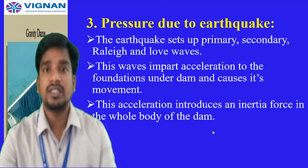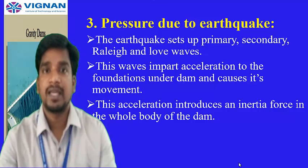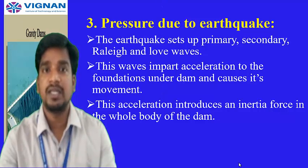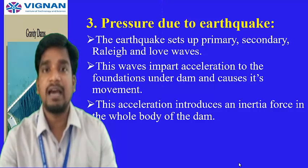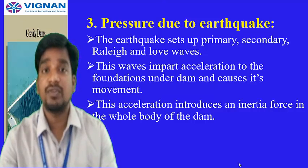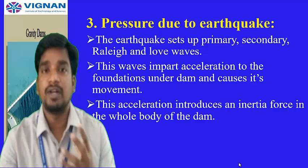Whenever an earthquake occurs in a particular area, different types of waves are generated: primary waves, secondary waves, Rayleigh waves, and Love waves. These four types of waves travel in different directions — one moves in the vertical direction, another in other directions — depending on their key characteristic properties. Coming to the gravity dam, if earthquake forces are acting on it, how will the dam behave?